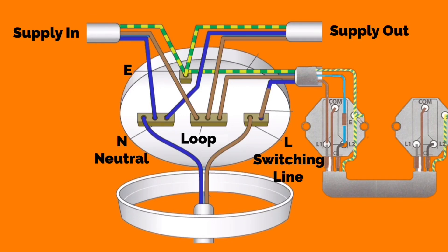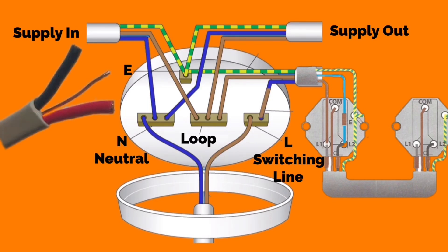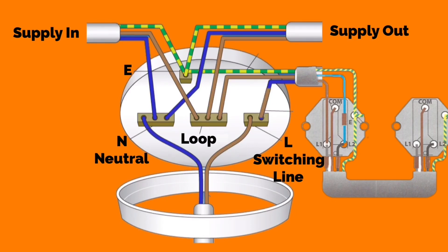When working in ceiling roses and pendants in domestic dwellings, you may also be faced with cable colors pre-2004. Pre-2004, the line conductor was red, the neutral conductor was black, and the circuit protective conductor was identified with green and yellow sleeving. The process is identical - care must be taken to make sure you're familiar with both new and old colors when making the appropriate connections.